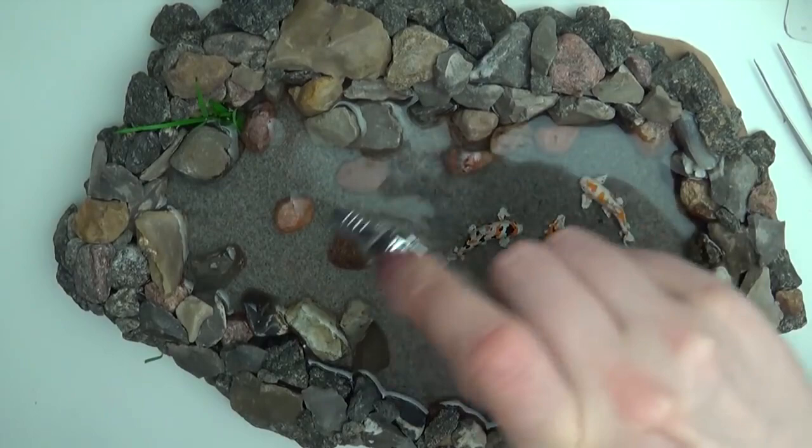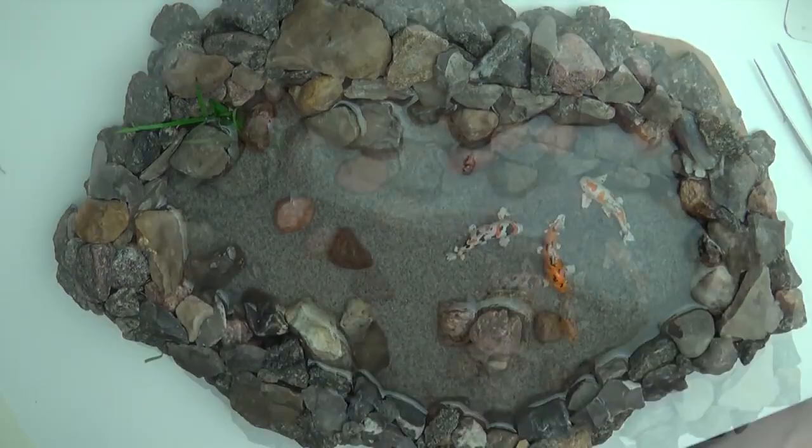Then all there's left to do is to figure out where you want your water lilies and glue them in place. And then we're done! Now you have your own miniature koi fish pond!